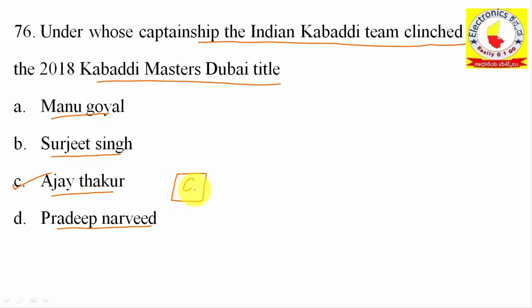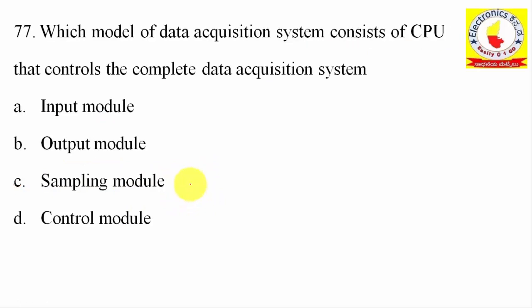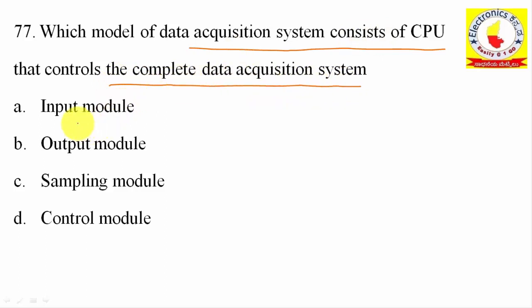77th question: Which module of a data acquisition system consists of a CPU that controls the complete data acquisition system? Options are: Input Module, Output Module, Sampling Module, and Control Module. With the help of the control module we can control the data flow — whether it is inflow or outflow. So the correct answer is option D, Control Module.